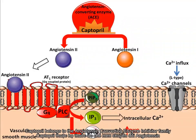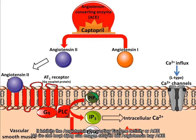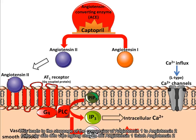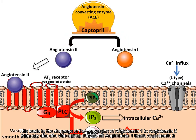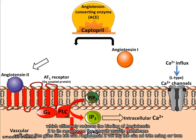Captopril belongs to the angiotensin converting enzyme inhibitor family. It inhibits the angiotensin converting enzyme activity, or ACE. This leads to the stoppage of the conversion of angiotensin 1 to angiotensin 2, which ultimately reduces the binding of angiotensin 2 to its receptor on the smooth muscle membrane.